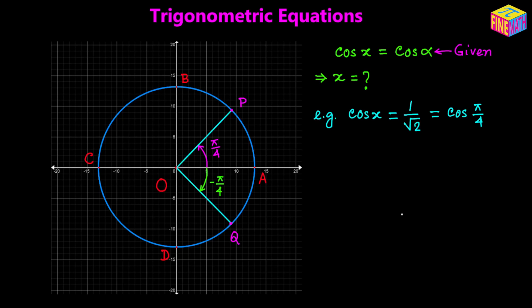Now let's talk about point P. As we can see, OP is making a positive pi over 4 angle with the positive direction of the x-axis. So we can write it as angle pi over 4, or we can say 0 times pi plus pi over 4.